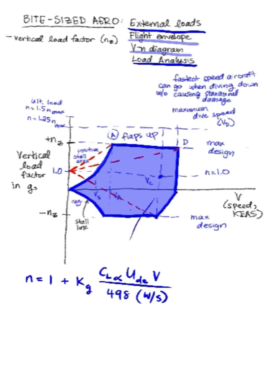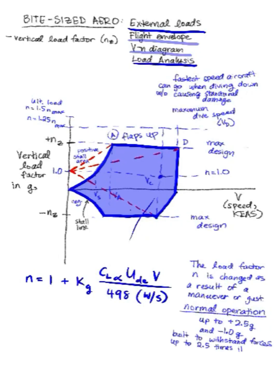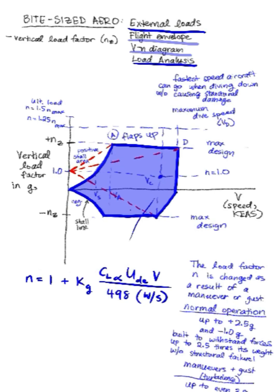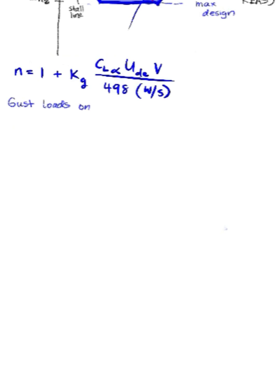Okay, as promised, let's do a practical example. So we have our equation for the load factor N, where the load factor is changed as a result of a maneuver or a gust. Things are normal. Airplanes can handle load factor 2.5 Gs in the positive direction, 1 G in the negative. Lift stands forces up to 2.5 times its weight. Now when there's maneuvers or turbulence from gust, it can handle up to 3.8 Gs or more in certain conditions. The next time you encounter turbulence, don't worry, we're built for it.